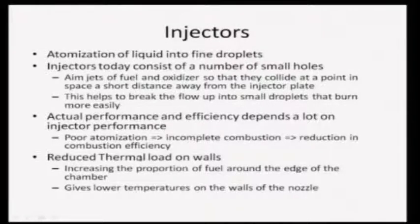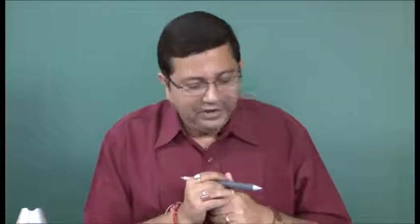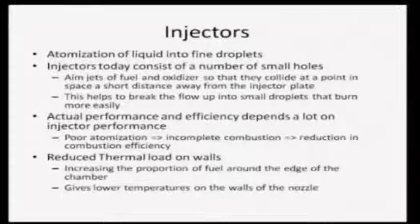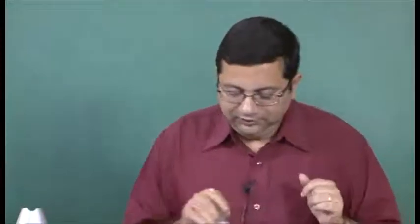Injectors also serve a secondary function of reducing thermal loads on the walls. By spraying fuel and oxidizer in a way that creates a thin fuel-rich film close to the chamber wall, they reduce the wall temperature downstream to the throat and into the nozzle. This prevents melting of the chamber material or heat losses from the system, and allows the combustion chamber to operate at higher pressure, giving higher specific impulse and better system performance.